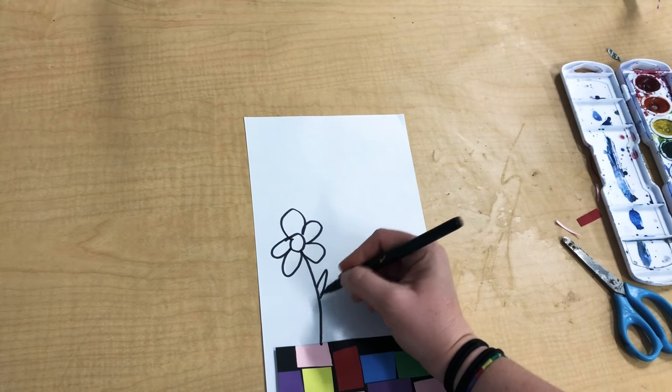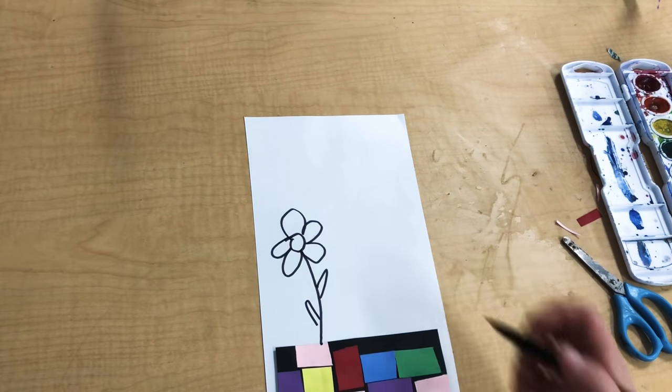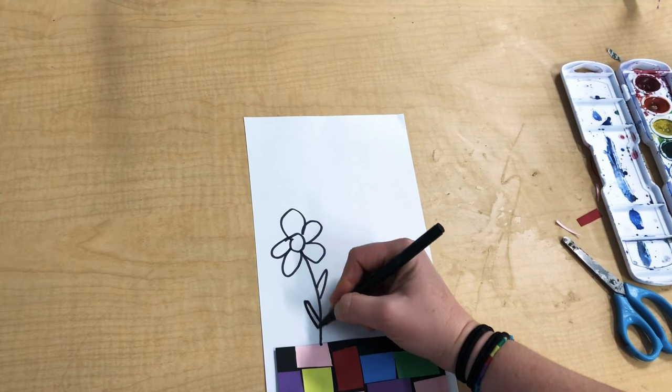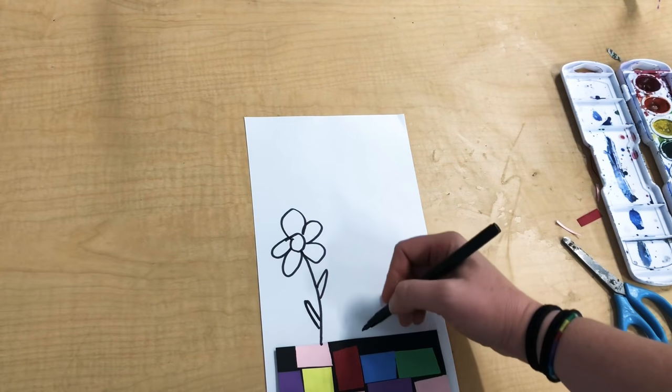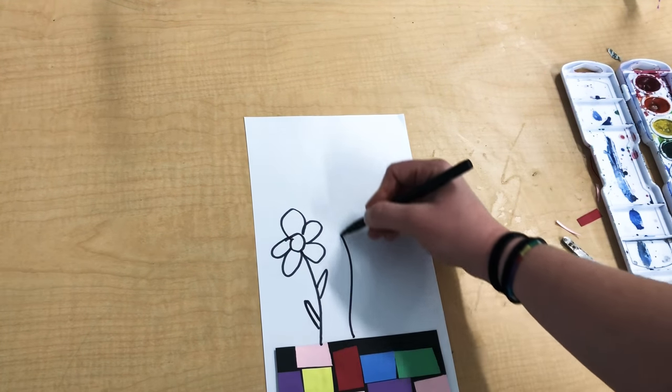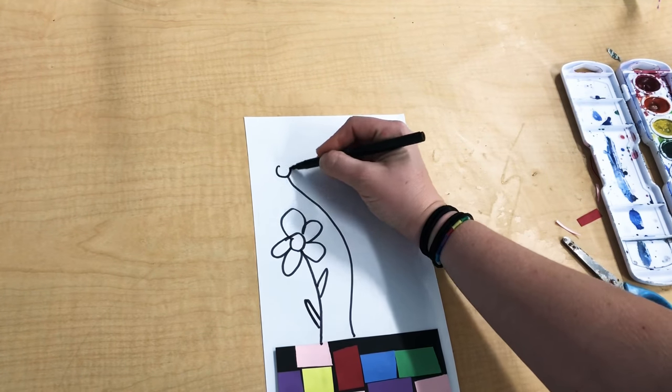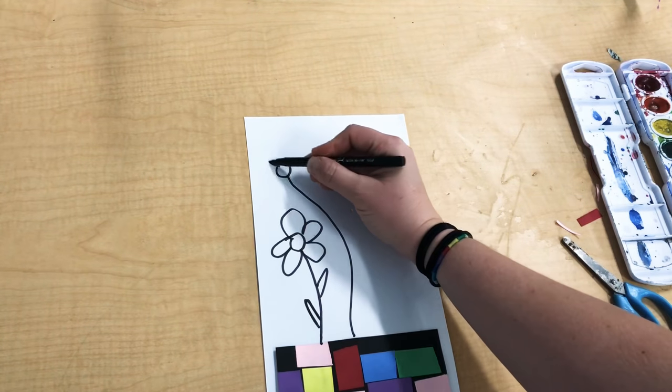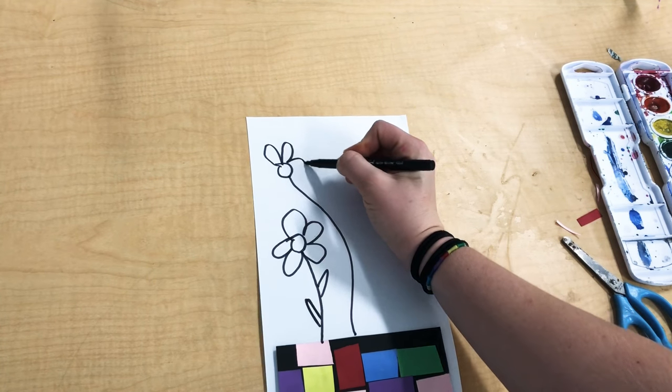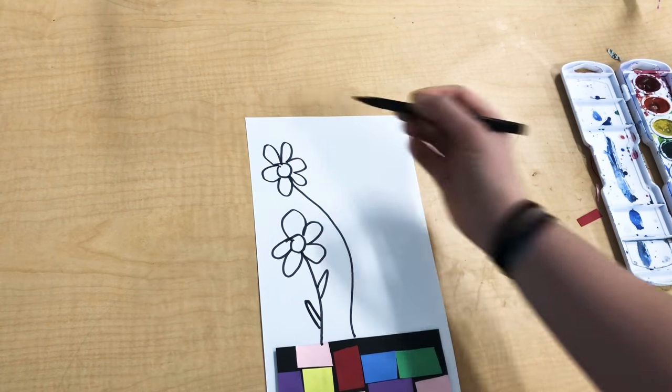If you want to be really fancy, you can even put leaves on your flower stems. Then I'm going to add a couple more flowers. My next one, I'm going to make a longer line so I can put a flower up here. Add a circle.